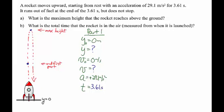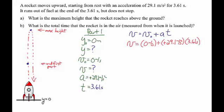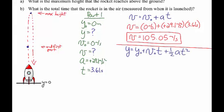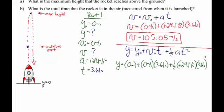To calculate the velocity at the end of 3.61 seconds, we use the equation that relates velocity and time. Putting in our initial velocity, acceleration, and time, we calculate that the velocity at 3.61 seconds is 105.05 meters per second. This velocity at the end of the first part is going to be used as our initial velocity for the second part. But before we move on, we need to find the height at 3.61 seconds using the equation that relates position and time. Plugging in our values, we calculate that the height at 3.61 seconds is 189.617 meters.